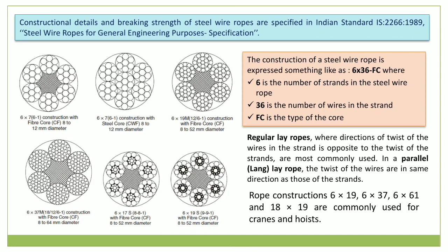Different types of cross-sections of steel wire ropes are specified; for example, 6x7 construction with fiber core is used for 8 to 12 mm diameter, and 6x19 construction with fiber core is used for 8 to 52 mm diameter. The basic raw material is wire rod, which is cold-drawn into wire for different diameters and strength grades. The wire is either untreated, galvanized, or stainless. Galvanized wire gives the rope greater protection in corrosive environments.